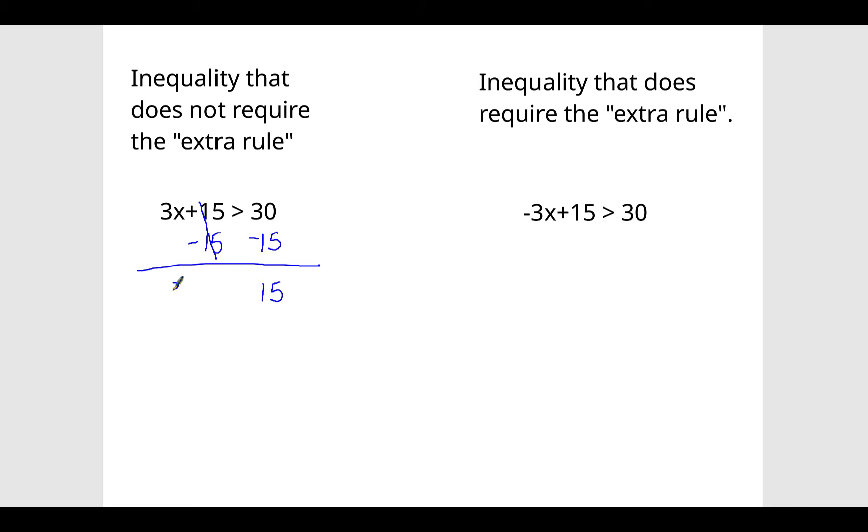And now we have 3x is greater than 15. So we're going to divide by 3 on both sides because x is being multiplied by 3. So we undo that or the inverse of that or the opposite of that is to divide by 3. These cancel out or become 1 and x is greater than 5, because 3 fits into 15 five times.